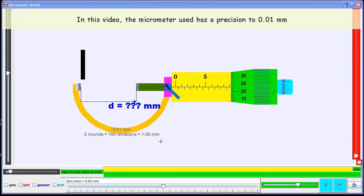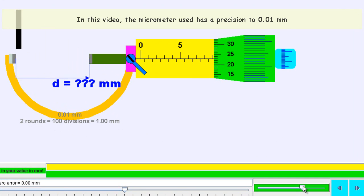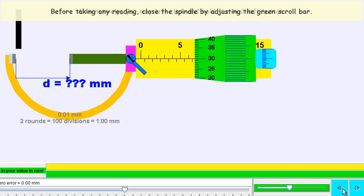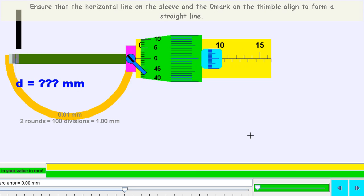In this case, most micrometers would have a precision of 0.01 mm. Using the slider bar or the left button, you can actually close the jaws.